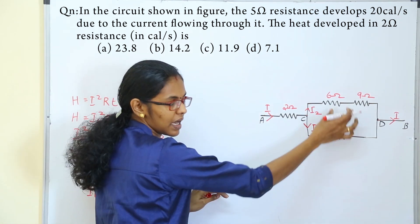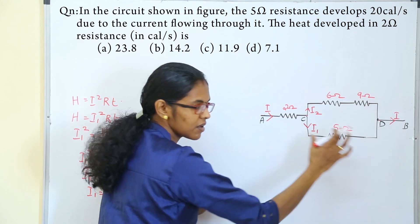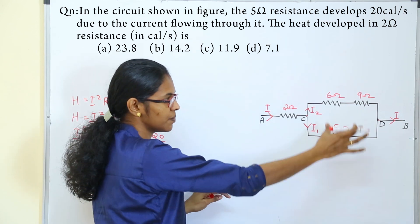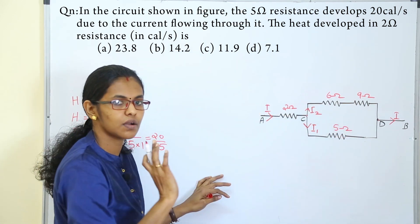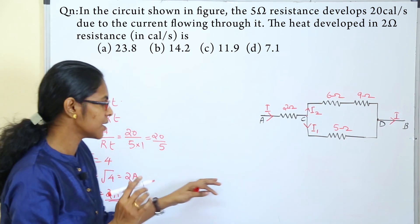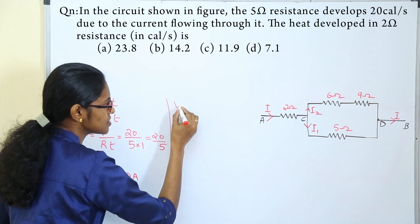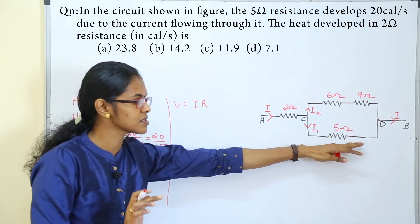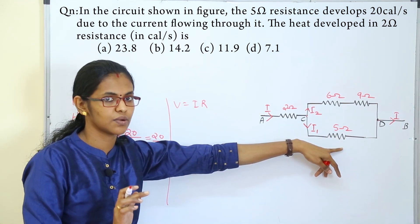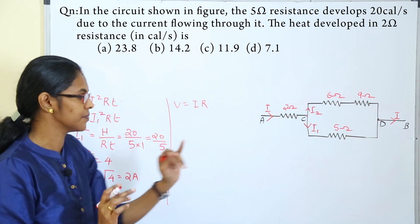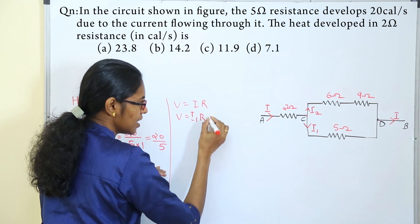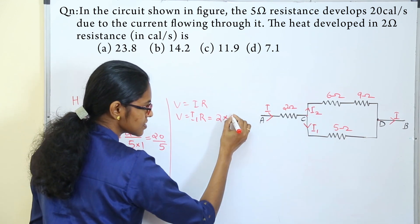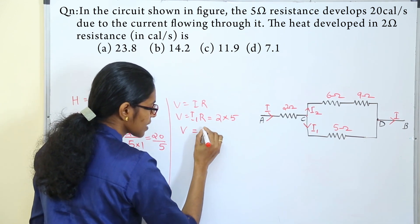Now, in this parallel combination, the potential across C and D is the same for both resistors. The potential V is equal to I times R. With I1 equal to 2A and R equal to 5 ohms, the potential equals 2 times 5, which gives a potential equal to 10 volts.